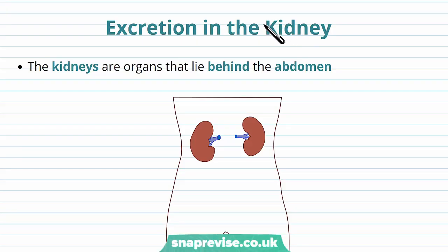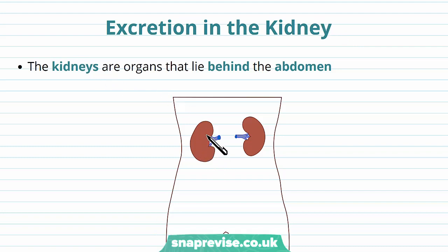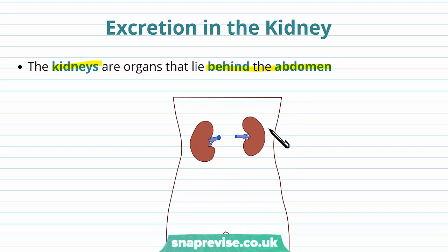The kidneys are a pair of organs in the body which are very important for two main functions. They're kidney bean shaped, hence the name kidney bean, and there's one either side of the body. They lie just behind the abdominal cavity, so they're mainly in the lower back. Here's just a diagram illustrating where they are, and here are the two kidneys.